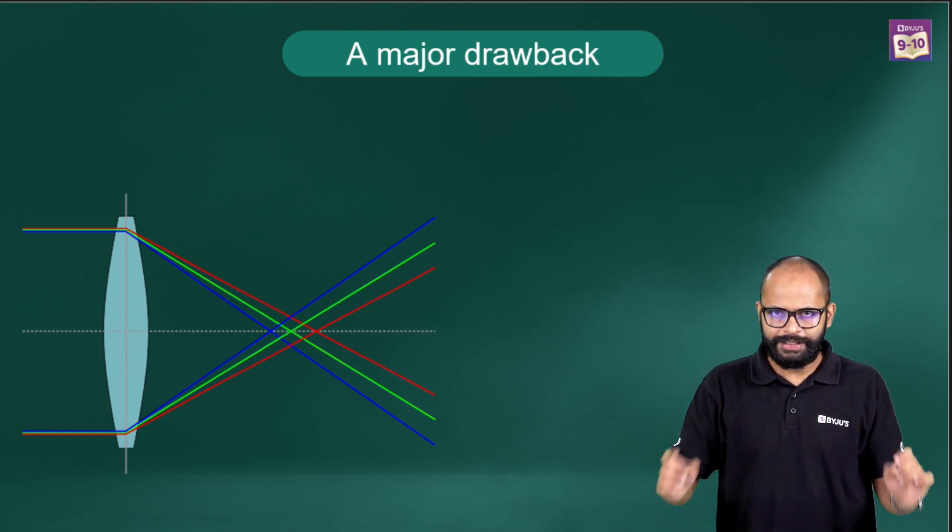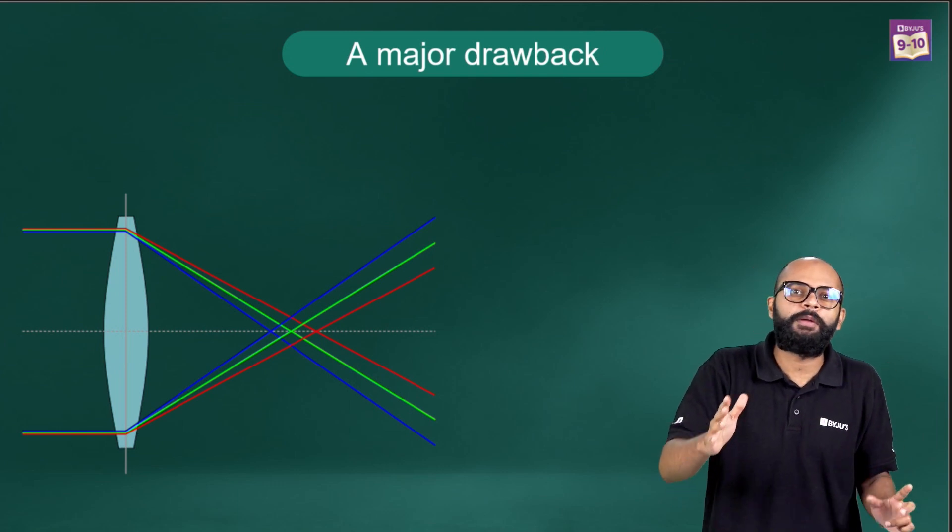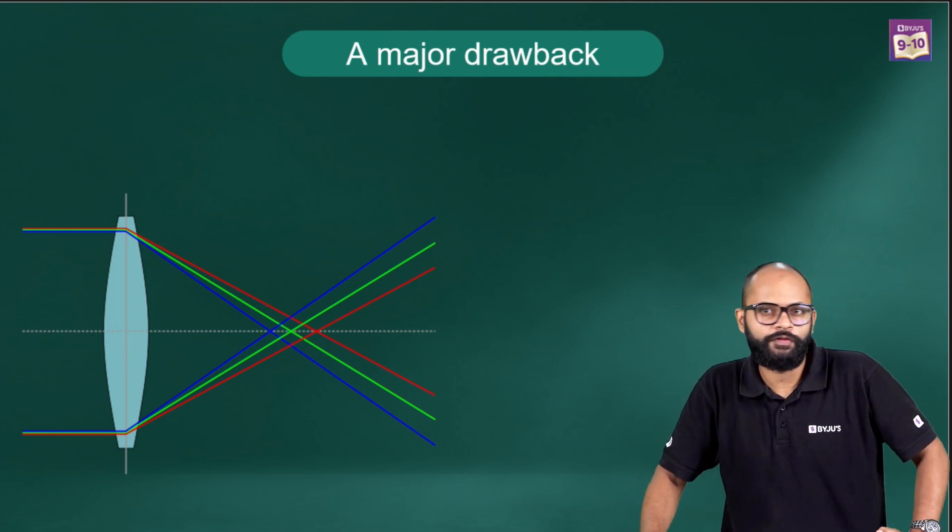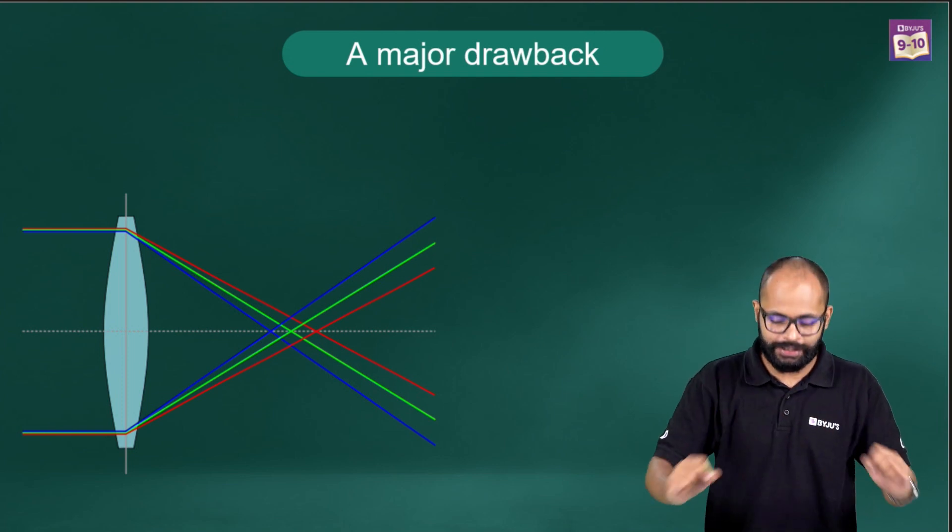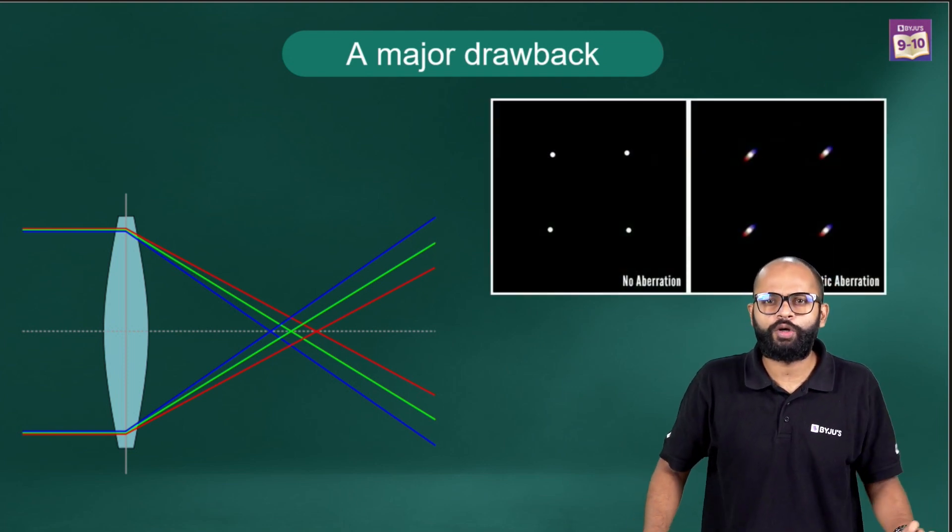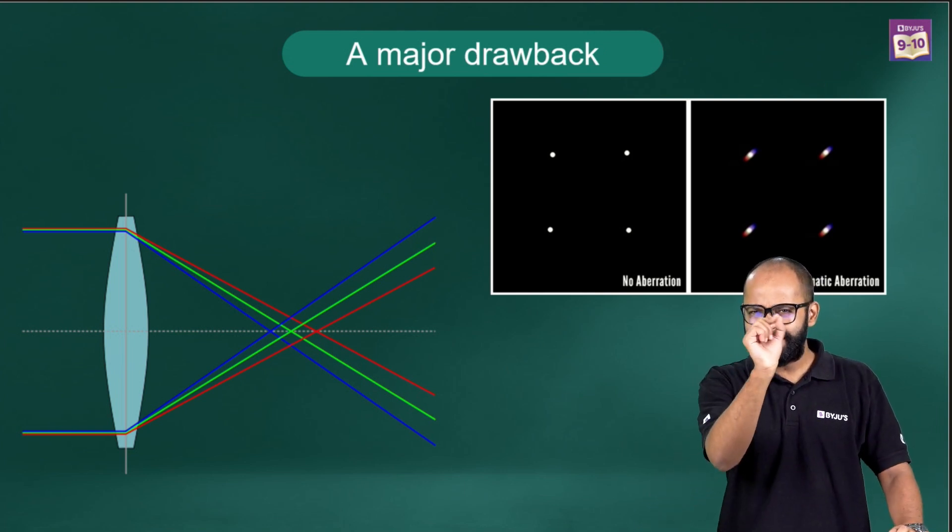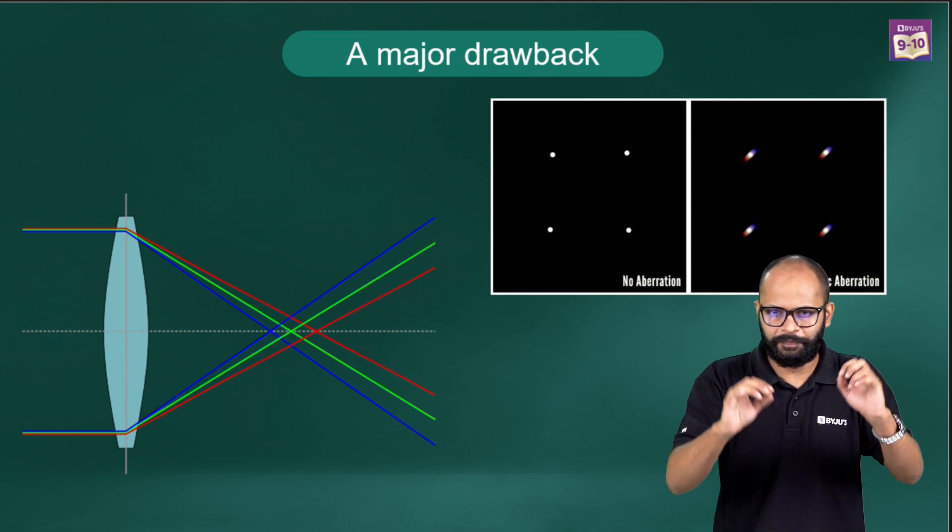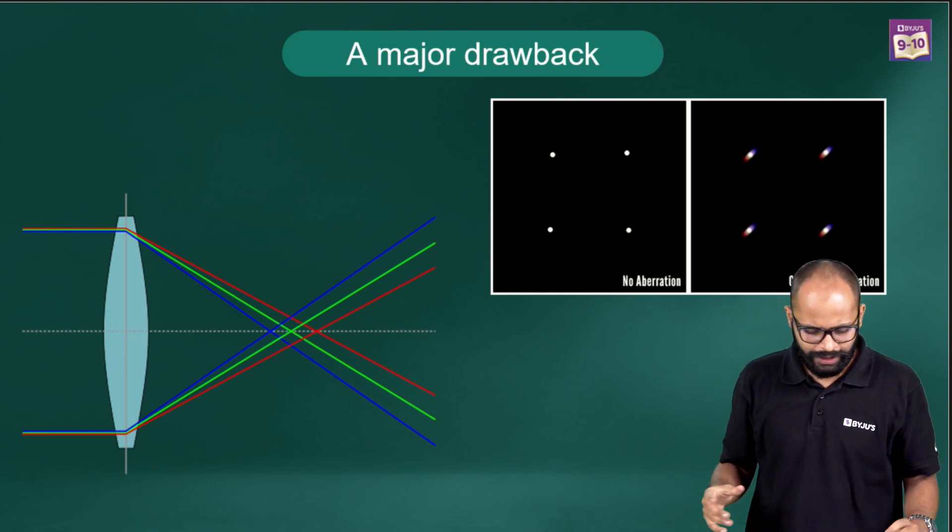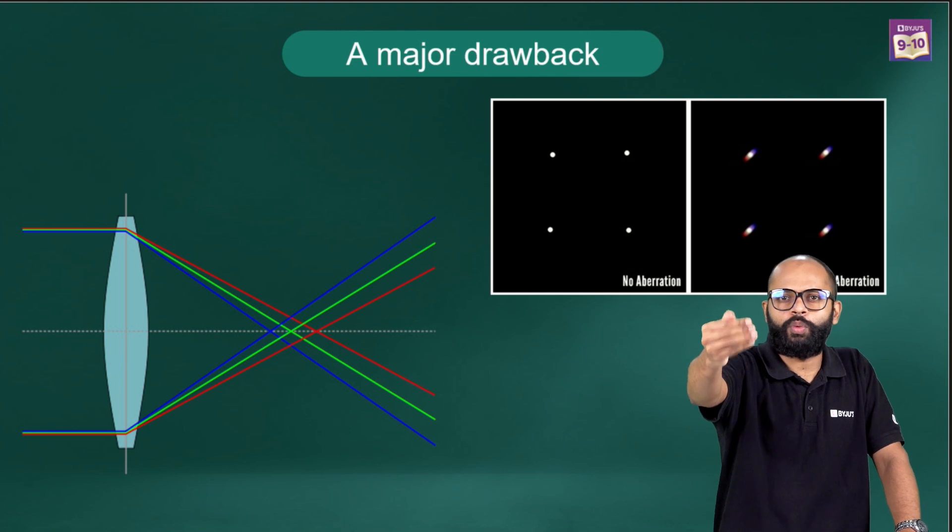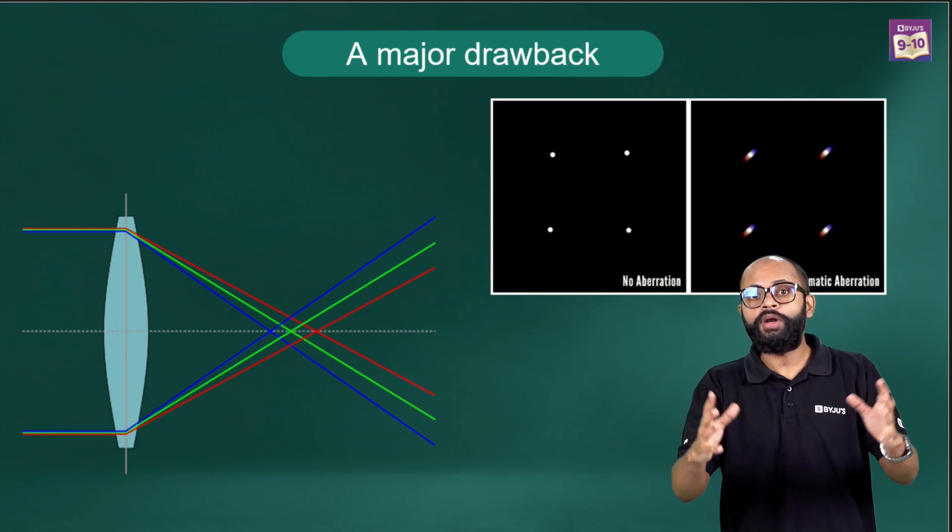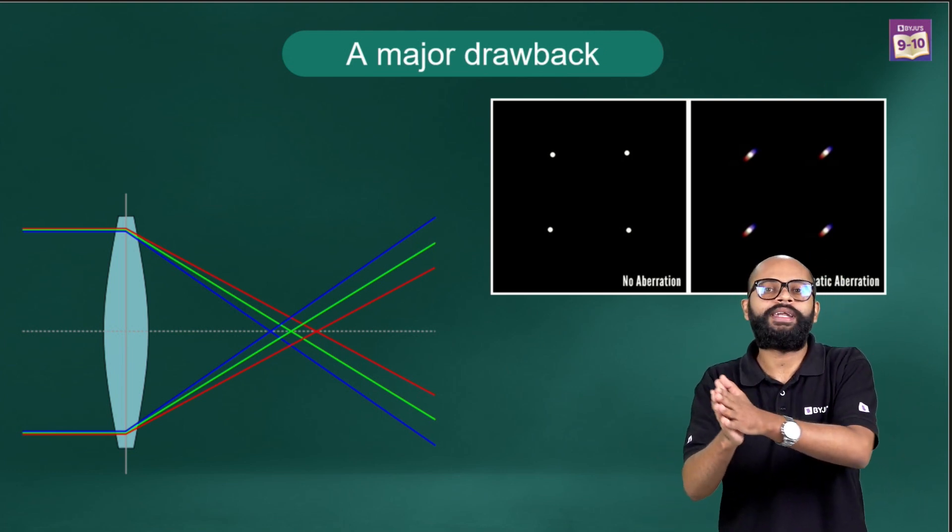The problem is each of these different colors has different bending, different refraction. When they bend differently, they will converge at different points. That is why Galileo's telescope had this problem, which we call chromatic aberration. You start seeing these hazy colors around the object you are trying to see. The more strong a telescope is, the more chromatic aberration will be there.